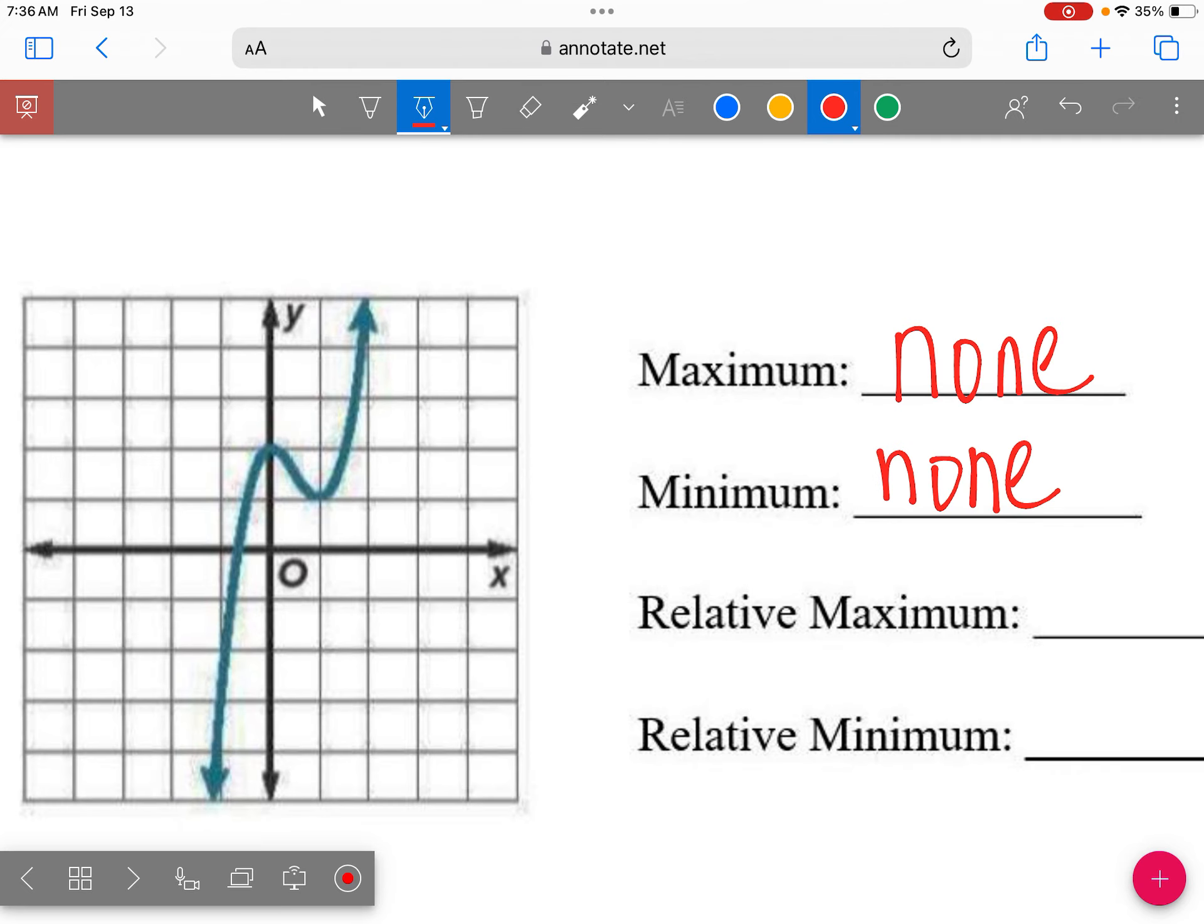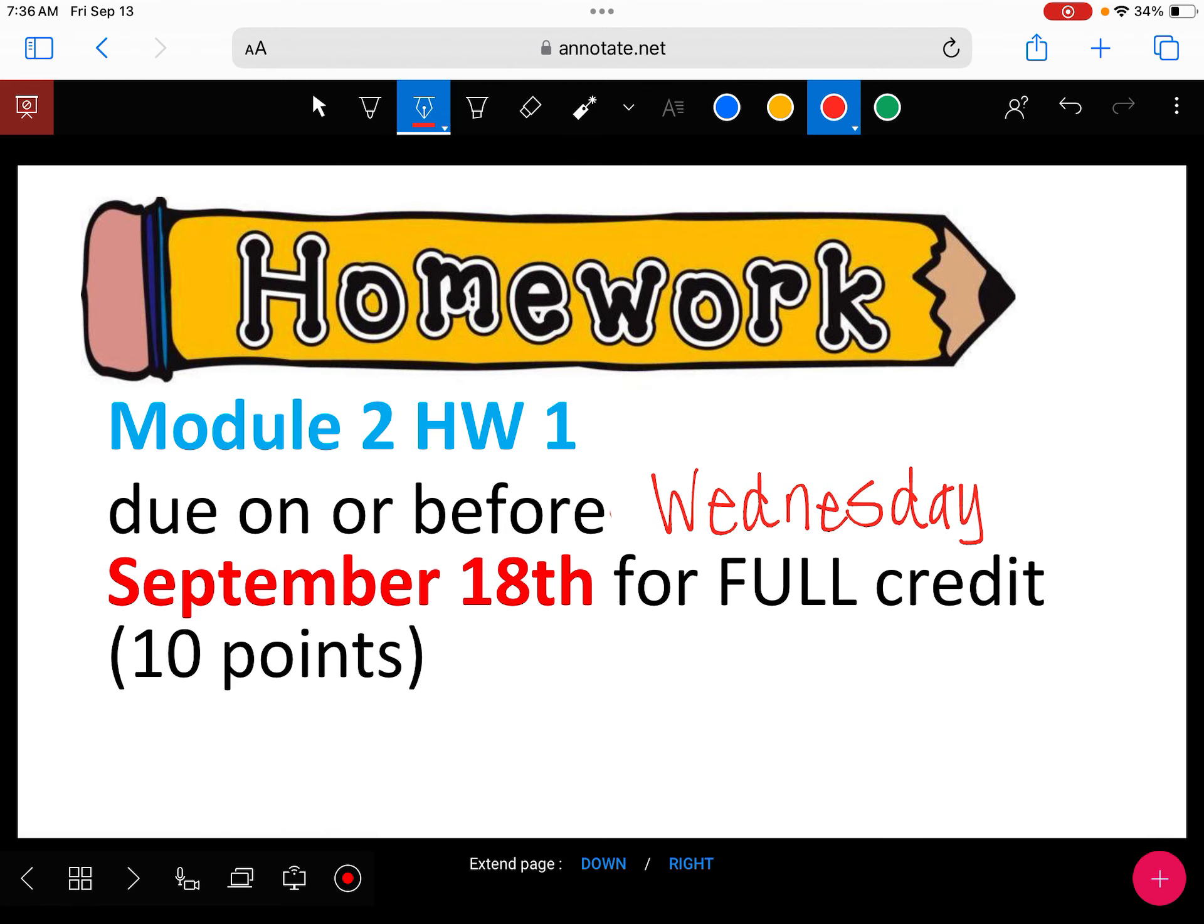So for my relative max, remember, I'm going to look for a frown and there is a frown right here. So what is the top of that frown? The top of that frown is right here and that's at zero two. For a relative min, I'm looking for a smile and that would be right here. And that point would be at one, one.